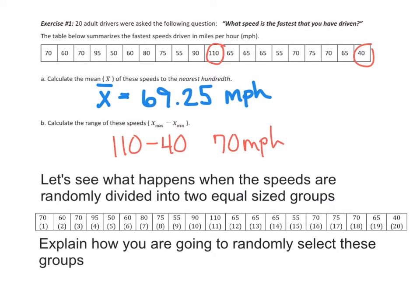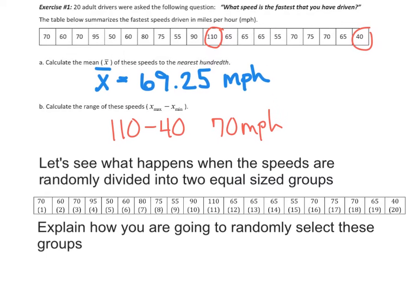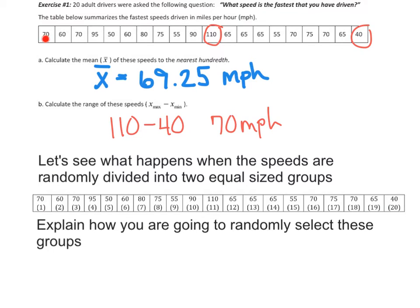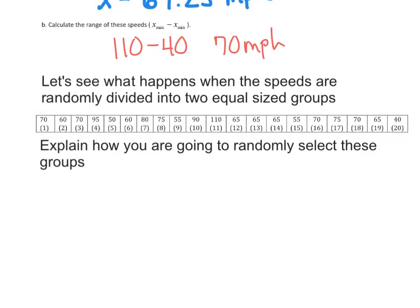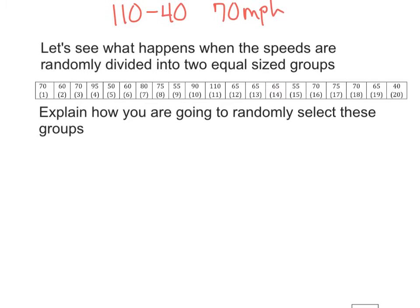Let's see what happens when these speeds are randomly divided into two equal sized groups. So what do I mean? Let's take a look at this table. I basically assigned 70 got the number 1, 60 got the number 2, 70 got the number 3, 95 the number 4, 50 the number 5, etc. So basically, I just numbered my speeds 1 through 20. And my goal is to randomly divide these into two groups. So explain how we're going to do random selection. That's a big theme we've talked about this past couple weeks here is random selection. How do we randomly select things?